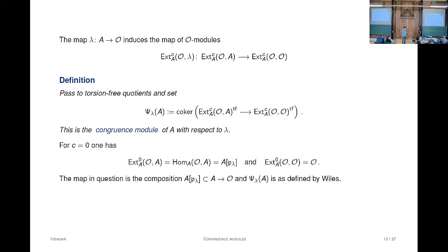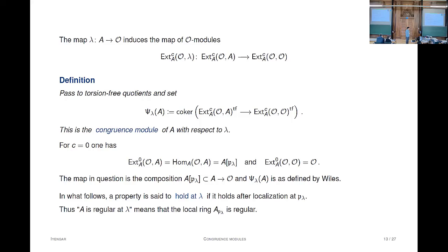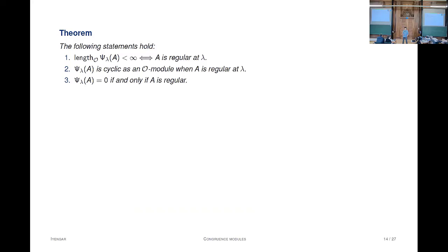Going forward, I'll have to talk about various properties holding at the point lambda, meaning they hold after localizing at the prime P_lambda. For example, the condition comes up that A is regular at lambda—all I mean is that when you localize A at P, it's a regular local ring. Here's the starting point of this work: this congruence module has finite length precisely when the ring A is regular at P. In the Wiles context, when you localized A at P it was a field; now what you want is a regular local ring—a smooth or regular point in Spec A.